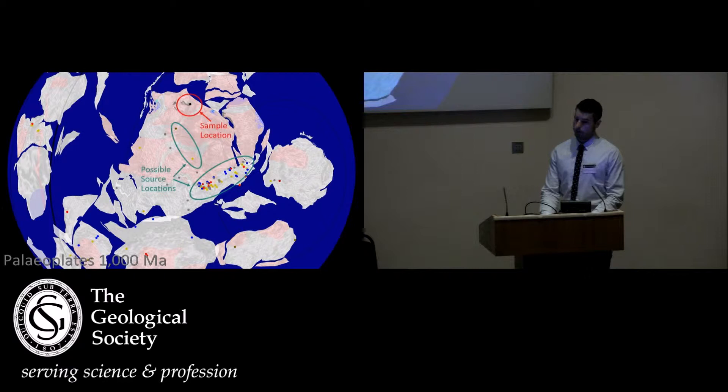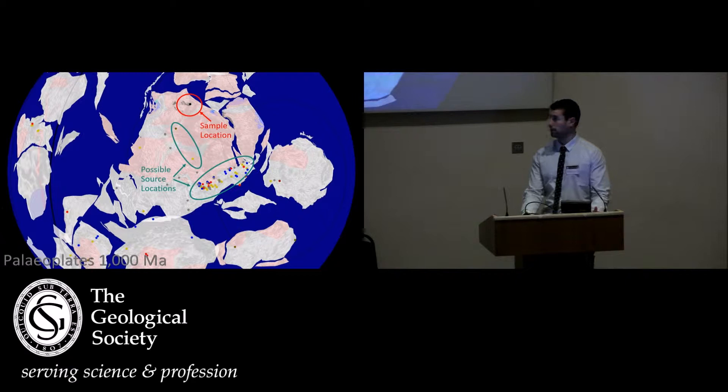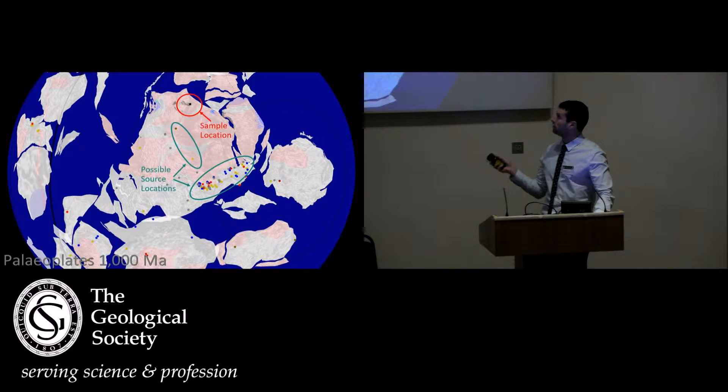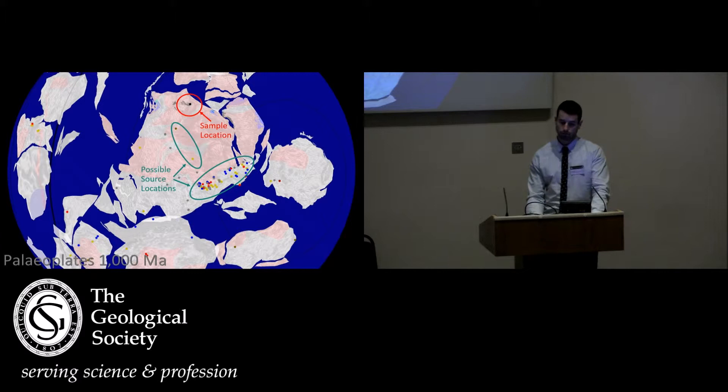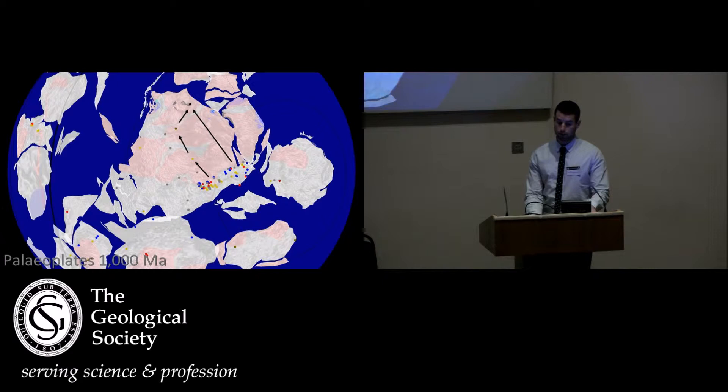I have one sample location at this age in the northwest corner of Laurentia, and I have a whole bunch of supplementary data. I've already explained the color symbology. I have the Grenville orogeny right here. We can see there's quite a bit of metamorphism, crystallization, and this is also an area for potential sources for the sample found up here.